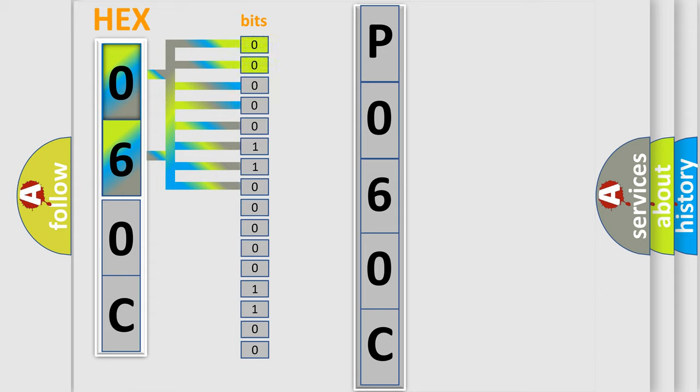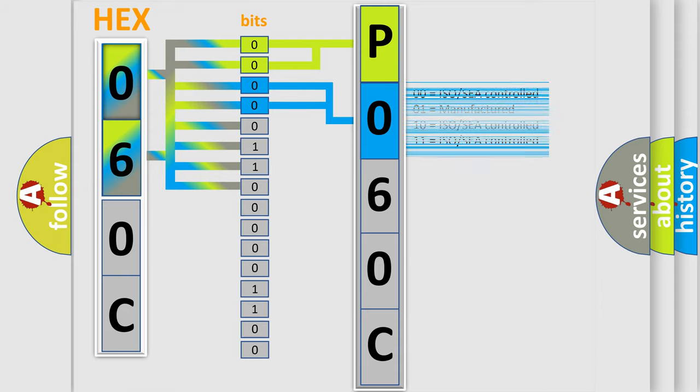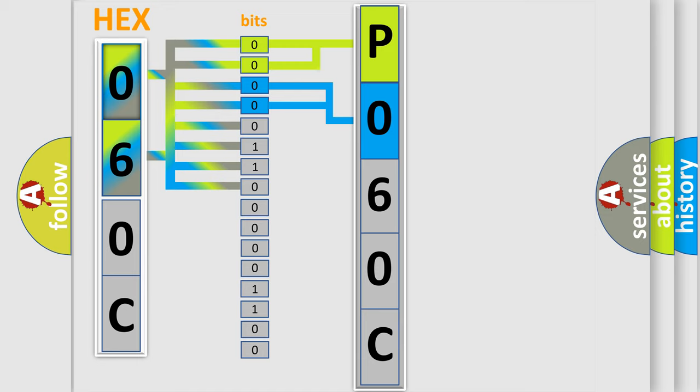By combining the first two bits, the basic character of the error code is expressed. The next two bits determine the second character. The last bit styles of the first byte define the third character of the code.